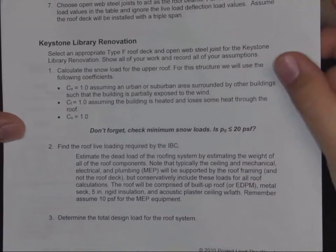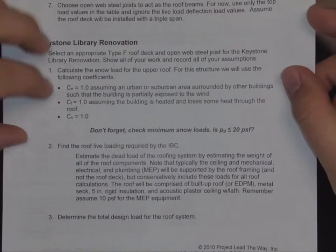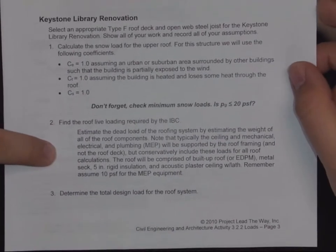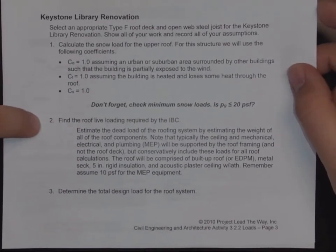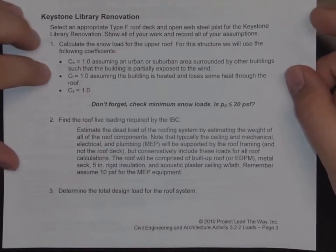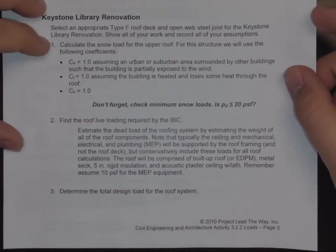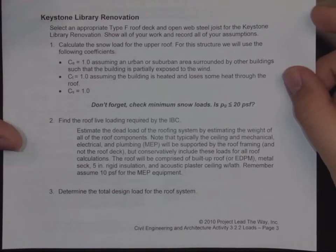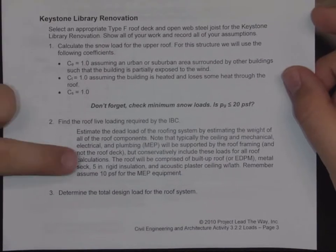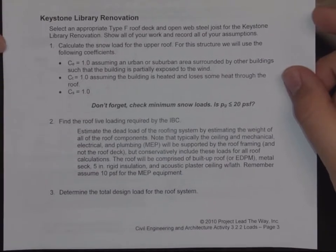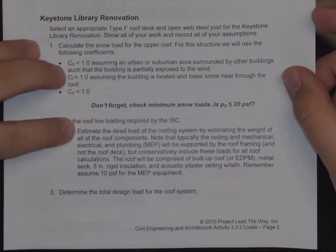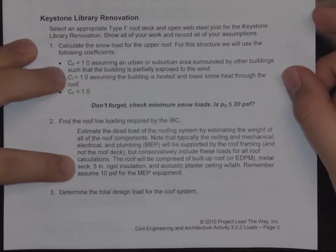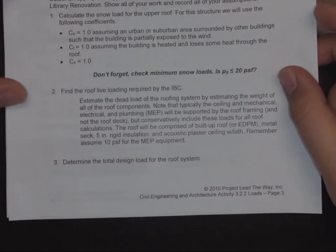Number two says find the roof live loading required by IBC. Most likely it's going to be the same because we're going to assume that this is a flat roof on the top. You're going to find out what all the dead load is too. Number three, determine the total design load.